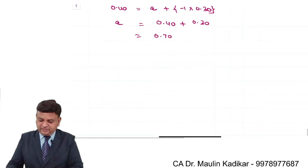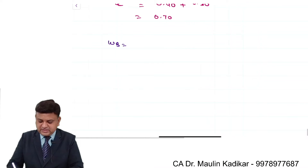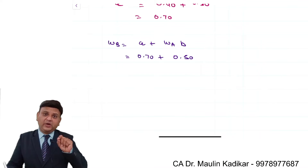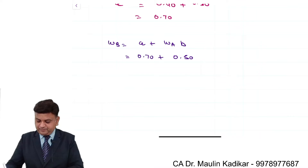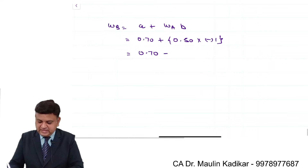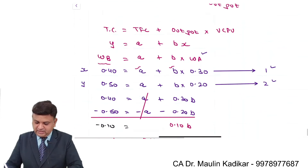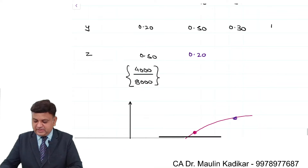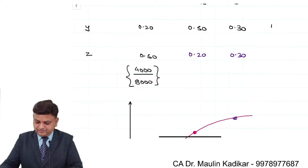Using the computed values A = 0.70 and B = −1, and substituting weight of A = 0.50 for portfolio Z: Weight of B = 0.70 + (0.50 × −1) = 0.70 − 0.50 = 0.20. Weight of C is then found as the balancing figure: 1 − 0.50 − 0.20 = 0.30. So for portfolio Z, weight of A = 0.50, weight of B = 0.20, weight of C = 0.30.